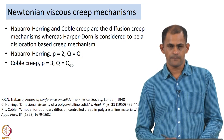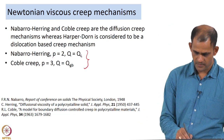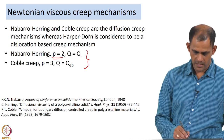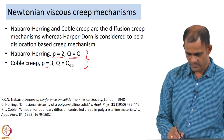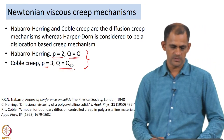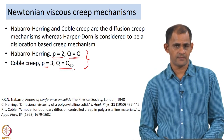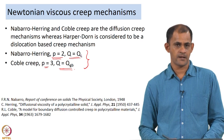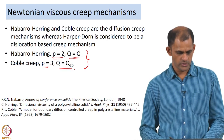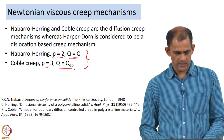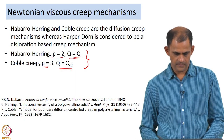Nabarro-Herring and Coble are diffusion creep-based mechanisms. The main difference between the two is that the grain size exponent P equals 2 for Nabarro-Herring and 3 for Coble creep, and the activation energy Q equals QL for Nabarro-Herring whereas Q equals QGB for Coble creep. Nabarro-Herring creep was identified by Nabarro in 1948 and independently by Herring in 1950, while Coble creep was identified by R.L. Coble in 1963.